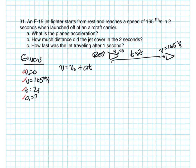I am looking for what's the plane's acceleration. So I need to rearrange these to isolate A. So I'll start with AT is equal to V minus V-naught. And then A is equal to V minus V-naught over T.